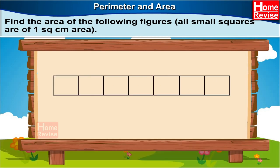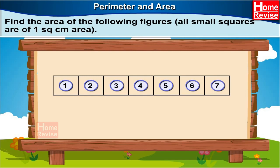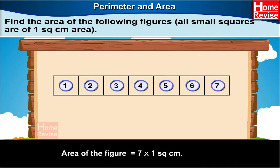Let us see the next rectangle. Here, the rectangle has 7 squares in it. Each square has the area of 1 square centimeter. Therefore, the area of the rectangle would be 7 into 1 square centimeter, which is equal to 7 square centimeters.